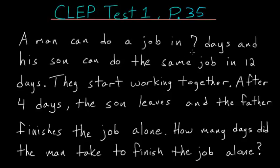A man can do a job in seven days, and his son can do the same job in 12 days. They start working together, and after four days, the son leaves and the father finishes the job alone. How many days did the man take to finish the job alone?